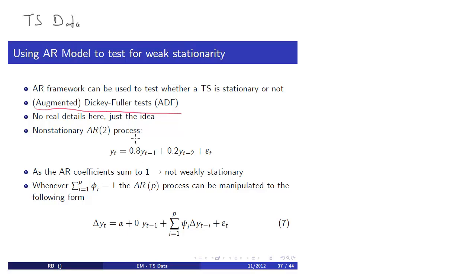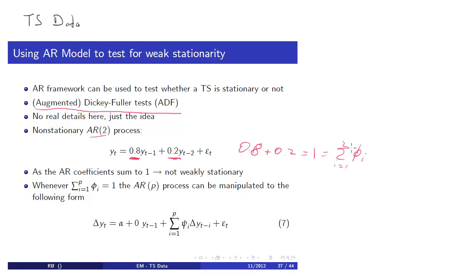Let's start from an example of an AR(2) model. We have two coefficients and you can see that 0.8 plus 0.2 is equal to 1. So the sum of these coefficients is equal to 1. That was of course the condition we said must not happen because that represents a non-stationary series. So we are now looking at a non-stationary process.